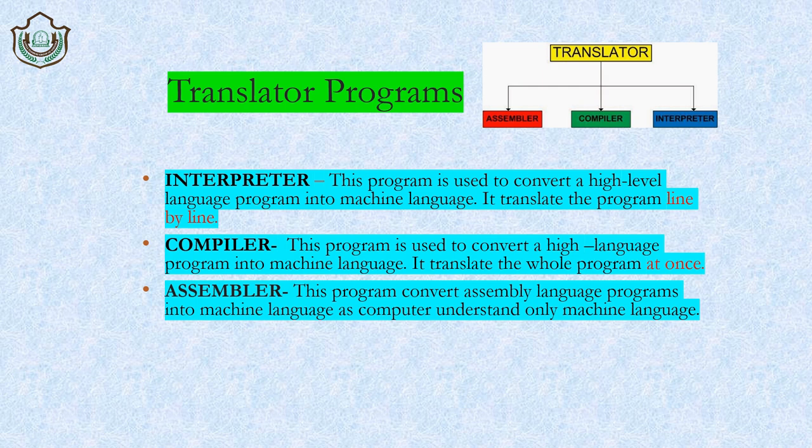The working principle of all three translator programs is the same: since the computer understands only machine language, these three translators — interpreter, compiler, and assembler — are used to convert programs into machine language.